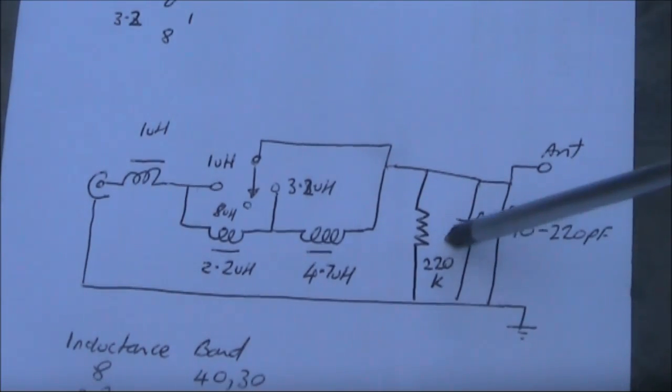This is the bleeder resistor, and here is the variable capacitor, both halves in parallel.